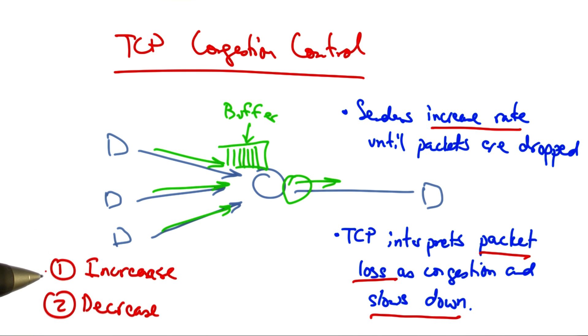So congestion control has two parts. One is an increase algorithm, and the other is a decrease algorithm. In the increase algorithm, the sender must test the network to determine whether the network can sustain a higher sending rate. In the decrease algorithm, the senders react to congestion to achieve optimal loss rates, delays, and sending rates. Let's now talk about how senders can achieve these increase and decrease algorithms.